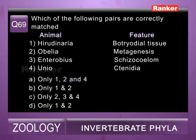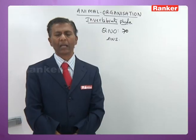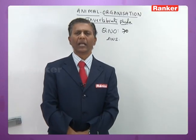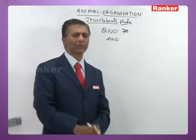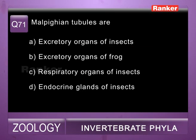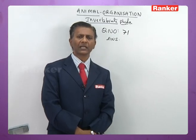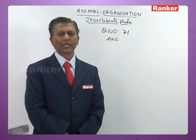Question seventy: which of the following has closed blood vascular system — a) Arthropoda, b) Annelida, c) Platyhelminthes, d) Mollusca. Among these, Annelids are the invertebrates with closed blood vascular system. So seventieth question correct answer is b) Annelida.